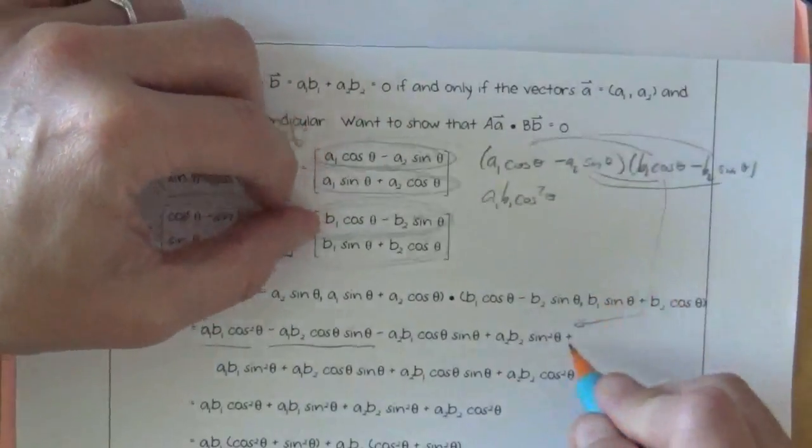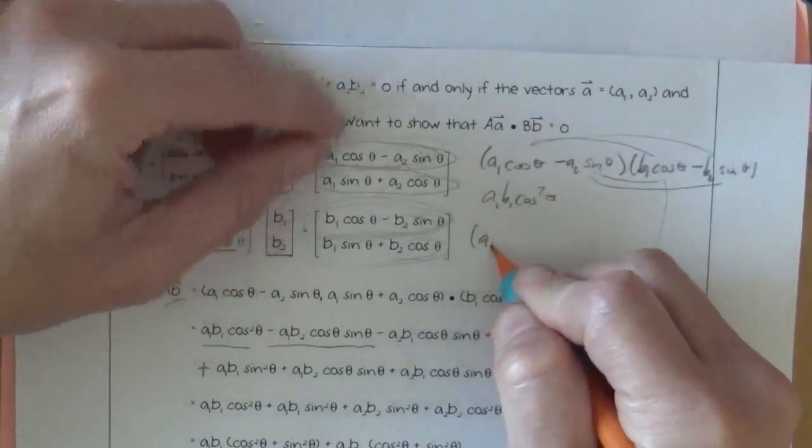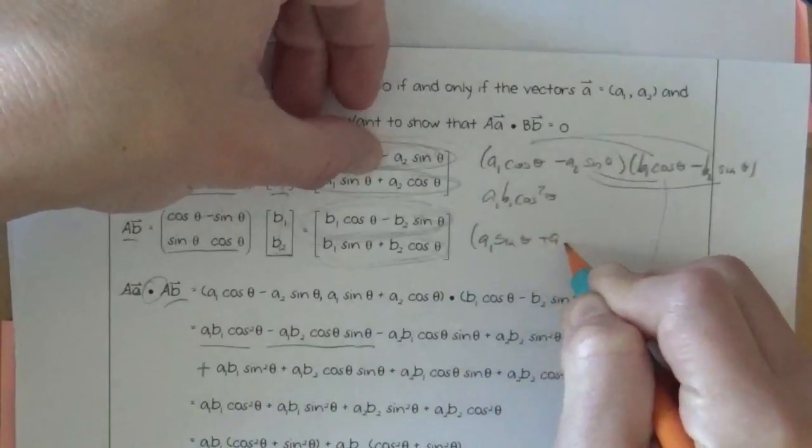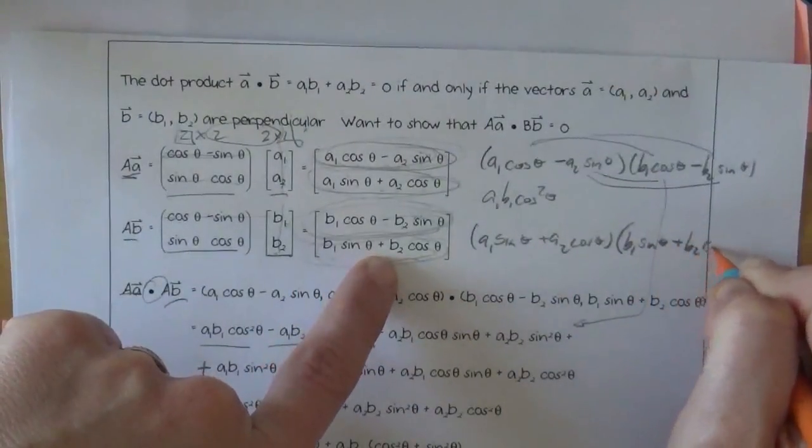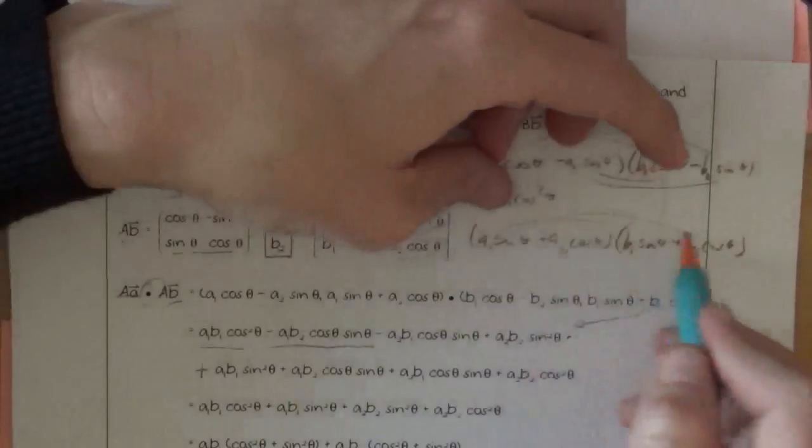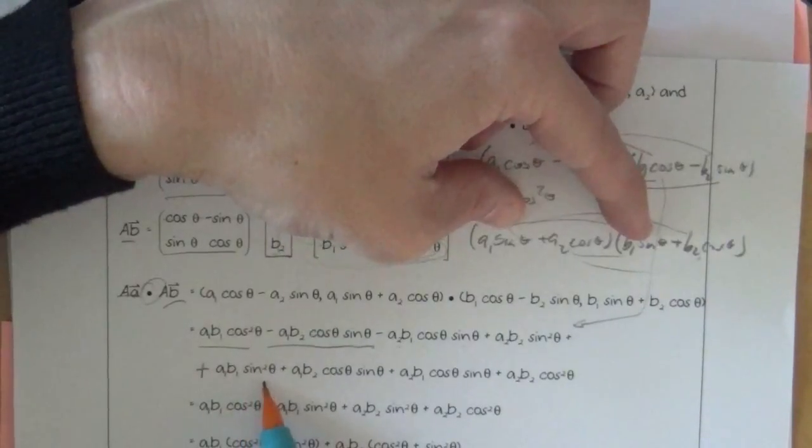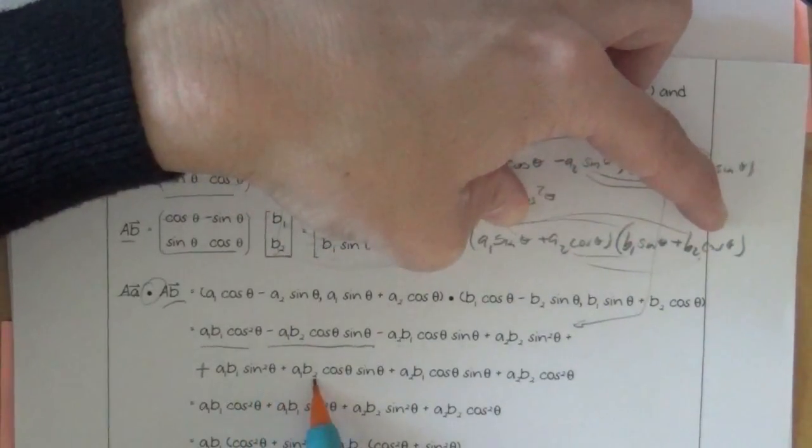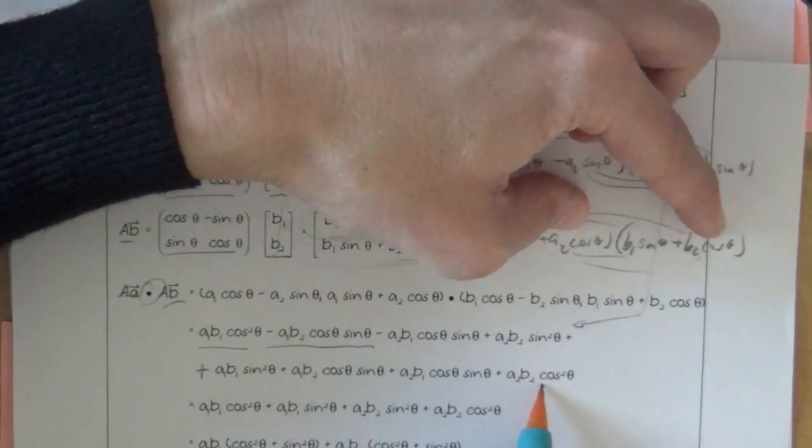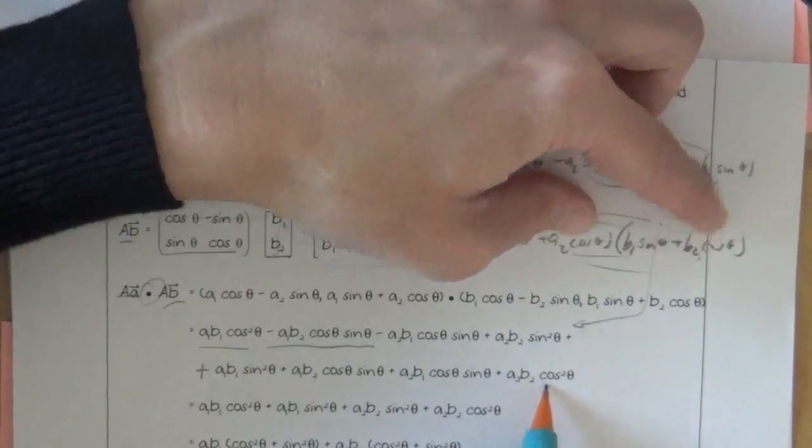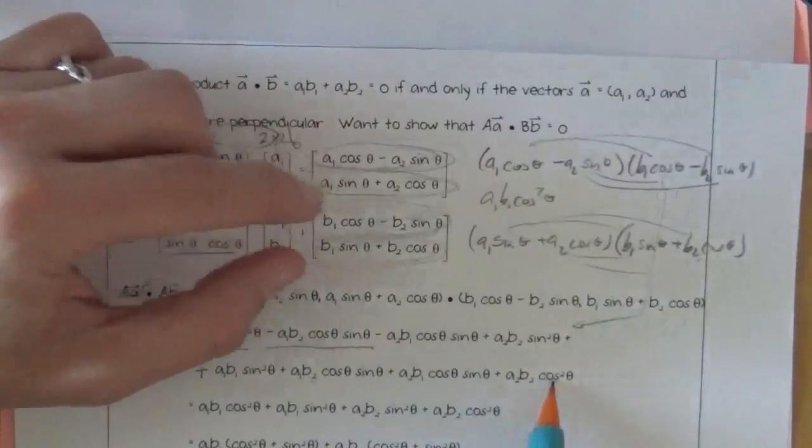And then they have a big plus, the Y's multiplied together. So when they did A1 sine theta plus A2 cosine theta times B1 sine theta plus B2 cosine theta, they just foiled this out and put it on this second line here. So that's A1 B1 sine squared theta plus A1 B2 cosine theta sine theta plus A2 B1 cosine theta sine theta plus A2 B2 cosine squared theta. Awesome! That's our dot product, multiplying the X terms of these vectors, multiplying the Y terms of these vectors, and summing them up.